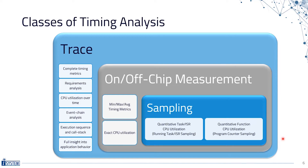First, a purely statistical analysis based on sampling certain objects within your software. Then, you could do some measurement, either on-chip or off-chip. Off-chip would be, for instance, toggling a pin and measuring timing with an oscilloscope.